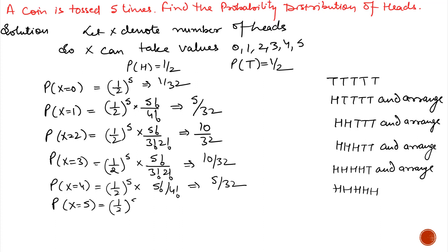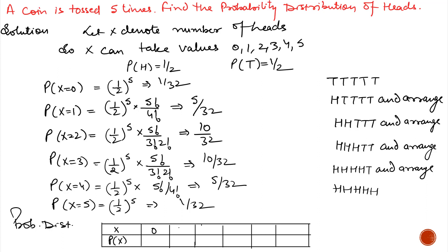The probability of 4 heads is 1 by 2 raised to the power 5 multiplied by 5 factorial divided by 4 factorial. Similarly, the probability of 5 heads is 1 by 2 raised to the power 5, which equals 1 by 32. We can write the values of X and corresponding probabilities in a table, which gives the required probability distribution. In this question we use simple probability of independent events and arrange all events using the formula of (p+q) factorial divided by p factorial and q factorial, where p items are of one kind and q items of another kind.